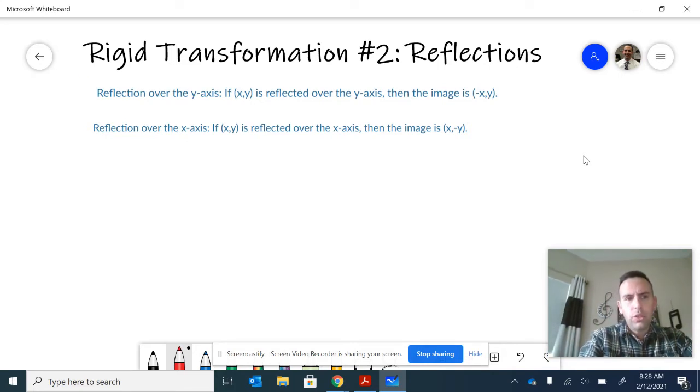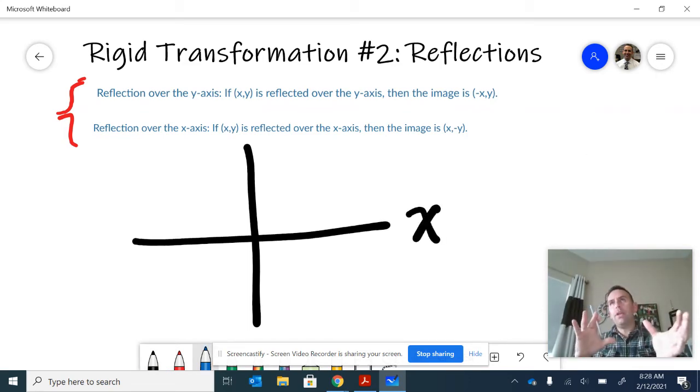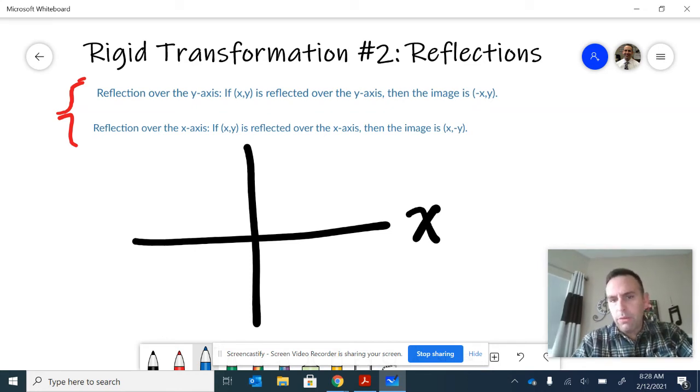Here we have two general ideas about reflections over y and x-axis. If you think about the coordinate plane and the x-axis, if you take any point or figure and reflect it across that x-axis, either top to bottom or bottom to top, you'll notice that only one of the coordinates changes. Let's look at an example.